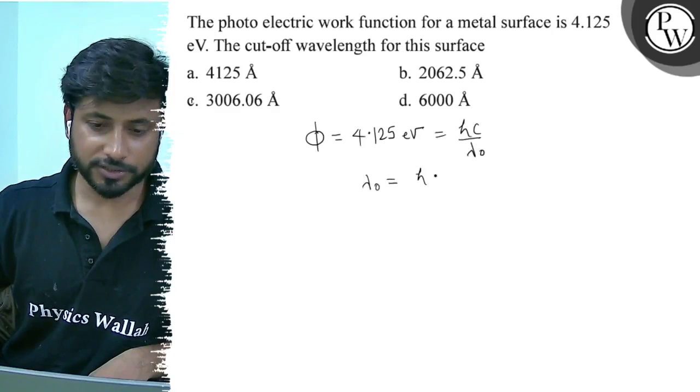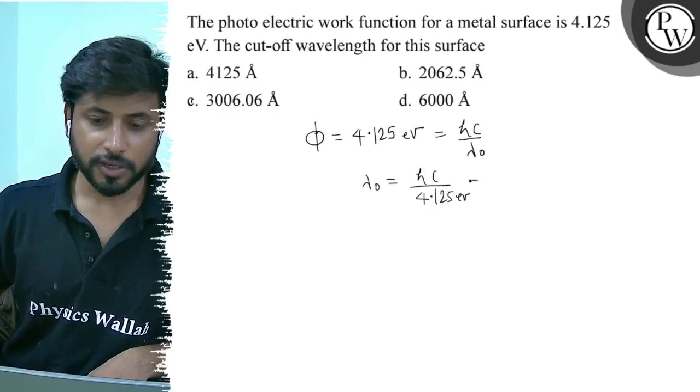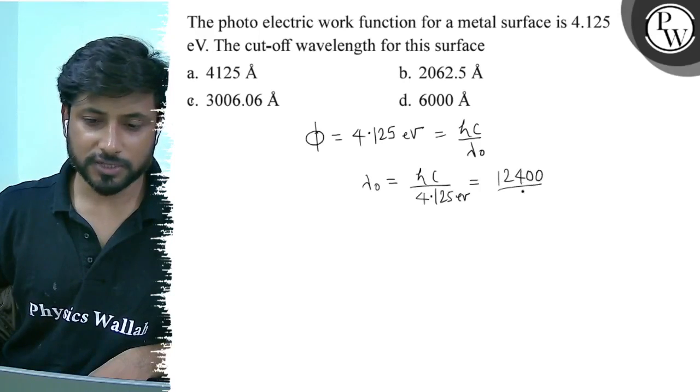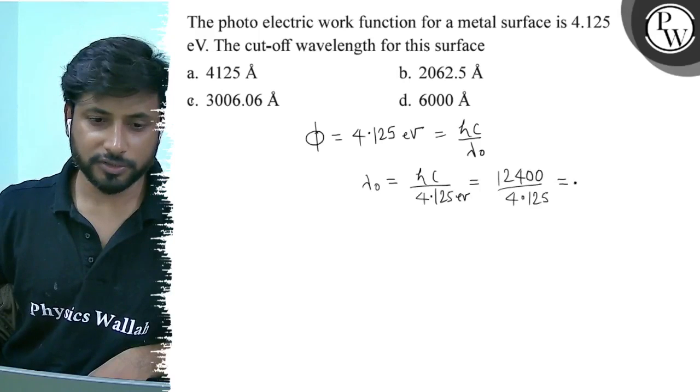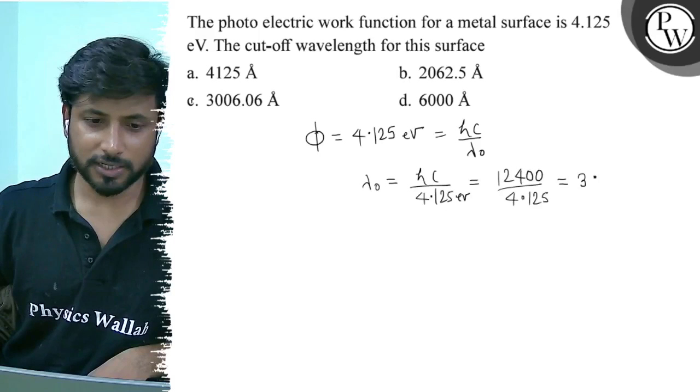So it will be hc divided by 4.125 electron volts. Now, hc is 12400, divided by 4.125. If we solve this, it will be 3006.06 angstroms.